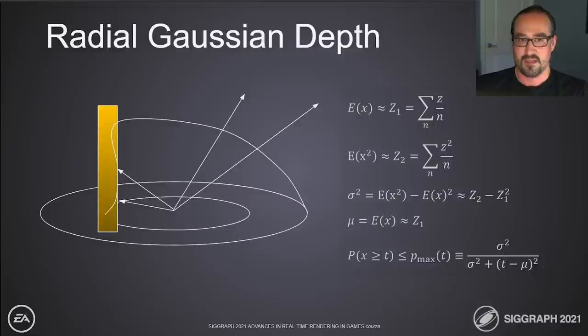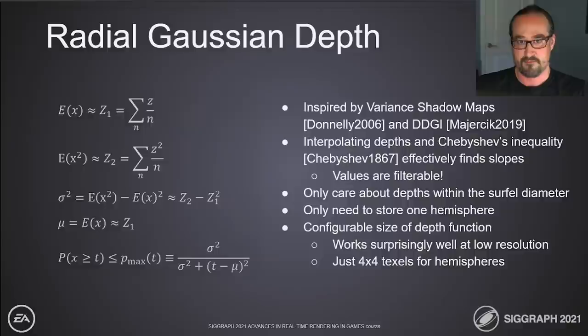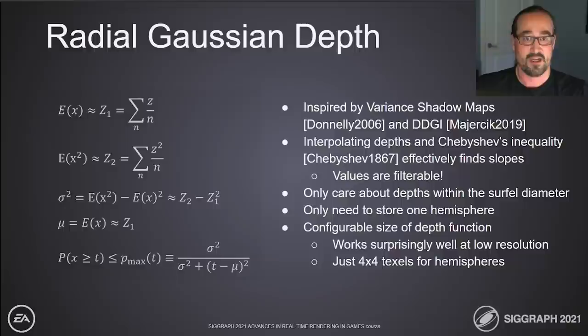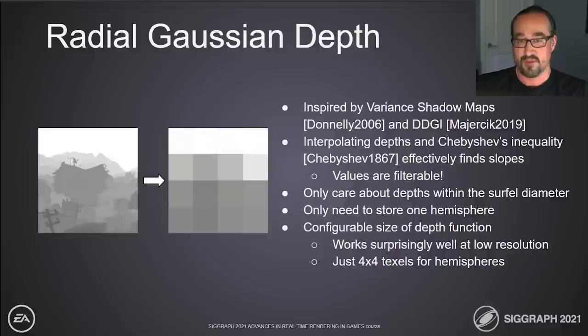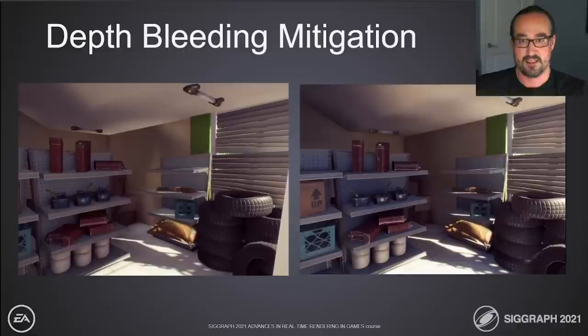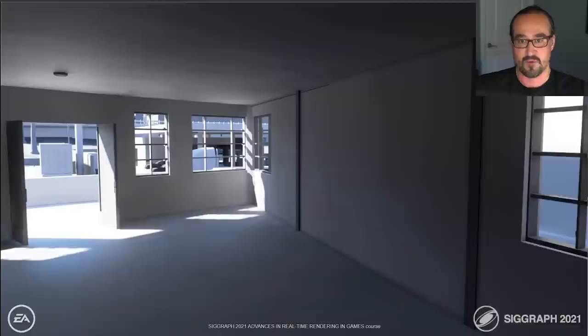We can use the mean and variance to apply Chebyshev's inequality for depth testing. This provides a smooth depth test that works great for recreating slopes in depth space. This technique is inspired by variance shadow maps and DDGI. In contrast to DDGI, we only care about depth within the surfel diameter and only care about the hemisphere. This, in combination with Chebyshev's inequality, works amazingly well even with very low-resolution depth functions — in our case, typically a 4×4 texel depth map per surfel hemisphere. That's enough to eliminate the blotchy artifacts from the image.